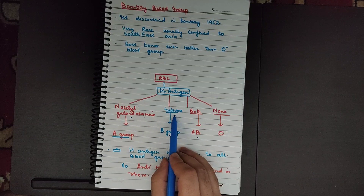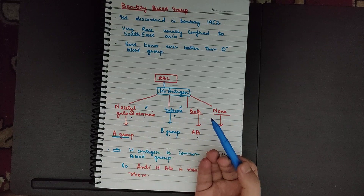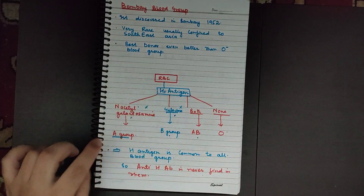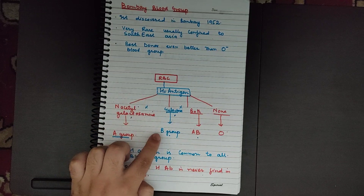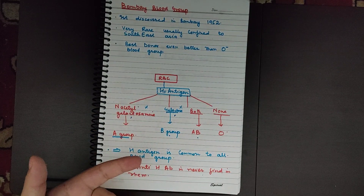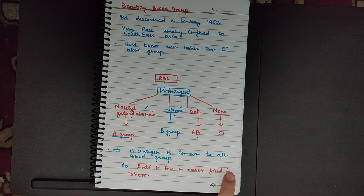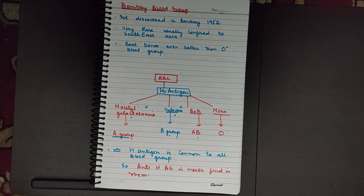In AB blood group, both A and B antigens are present along with H antigen. If we add neither N-acetyl galactosamine nor galactose, it will be the O blood group. So the A blood group has H antigen and A antigen; B blood group has H antigen and B antigen; AB has A, B, and H antigens; and O blood group has no A or B antigen but does have H antigen.